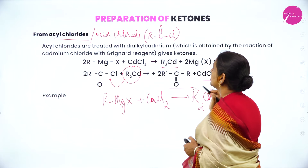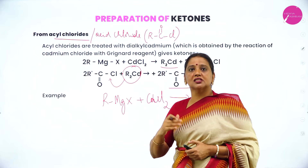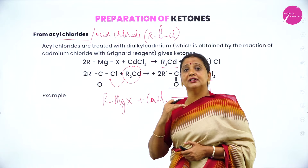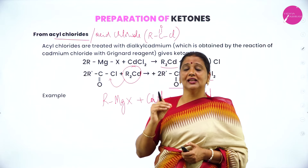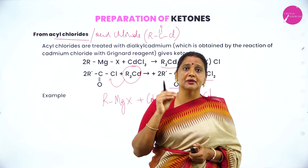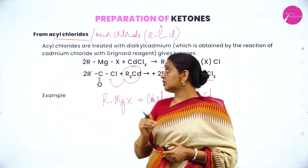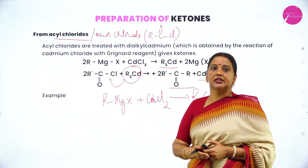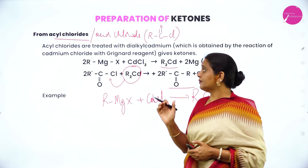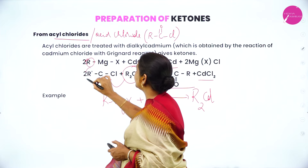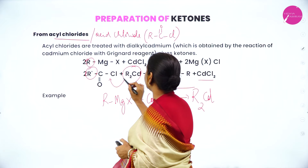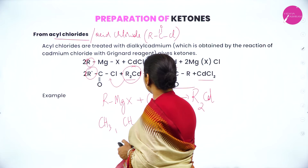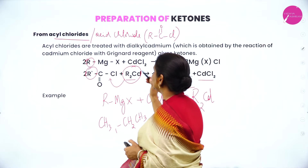This dialkyl cadmium is added to acid chloride and you will get ketone and cadmium chloride. So this reaction consists of two steps. If you want to give an example, in place of R, R dash, and R2, you put methyl group or ethyl group and you will get a specific example.